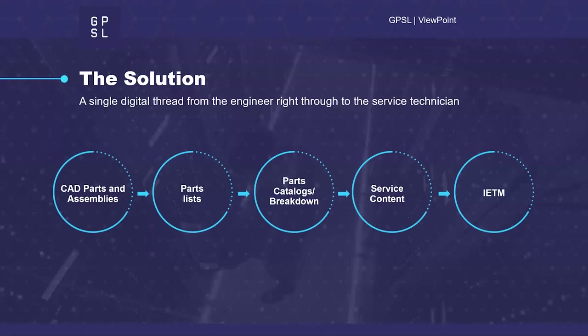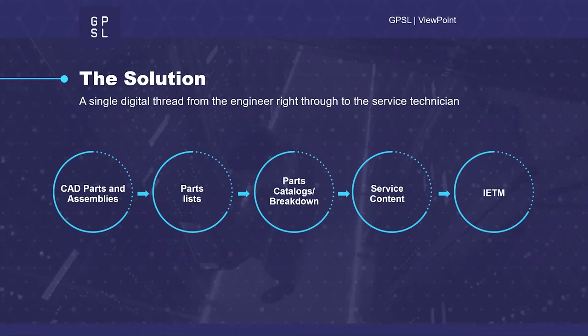What we're talking about today is taking a digital thread from the engineering parts and running it through parts lists, parts catalogs, and service content, bringing it all the way out into the field for delivery — one single thread that runs through everything. Your CADs in Windchill drive information down through E-BOMs and S-BOMs, into parts lists, into data modules, and ultimately into manuals, which are then delivered out into the field.